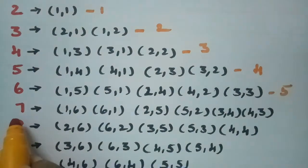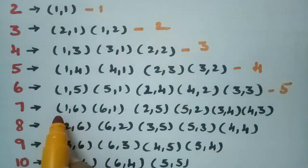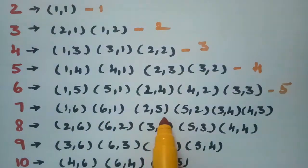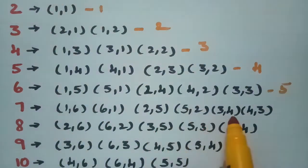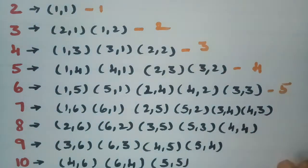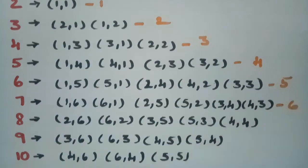For getting seven as a sum when two dice are thrown, the outcomes are (1,6), (6,1), (2,5), (5,2), (3,4), and (4,3) — total six chances.